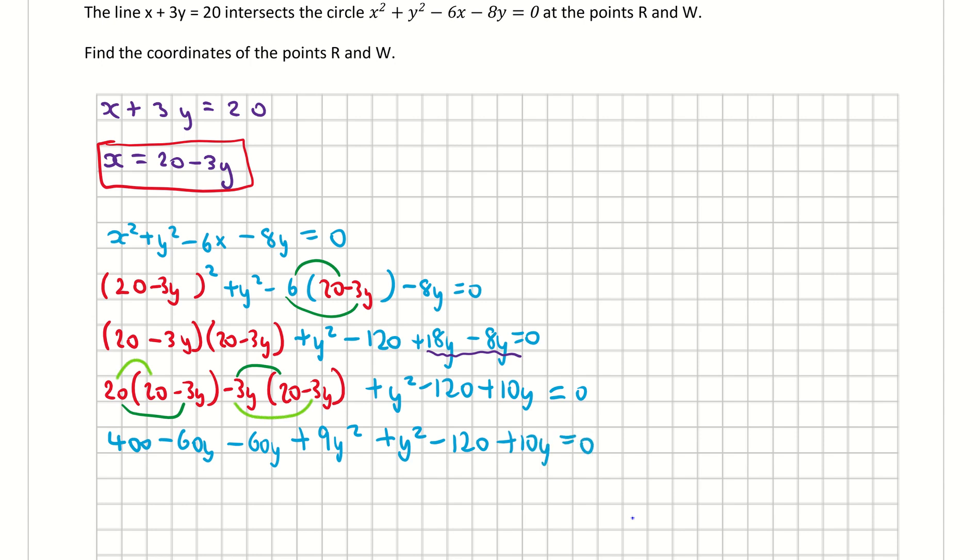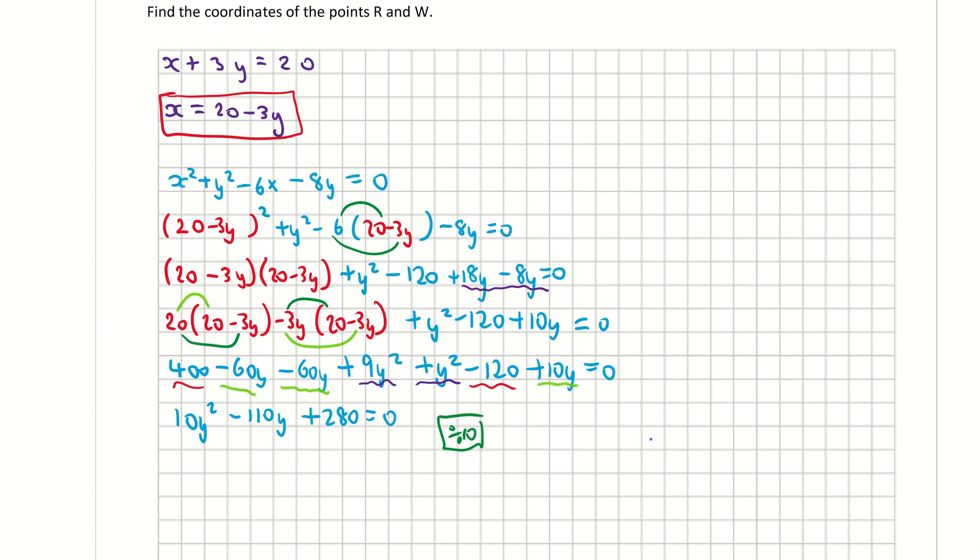I'm now grouping terms. I have 9y² and plus y², which gives 10y². I have minus 60 minus 60, which is 120y, and then plus 10y gives me negative 110y. Then grouping my constants: 400 and minus 120 gives me positive 280. I've got a quite large quadratic here, so I'm going to divide across by 10 to make it easier. That gives me y² - 11y + 28 = 0.